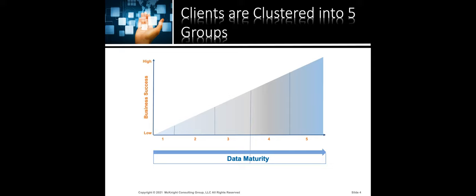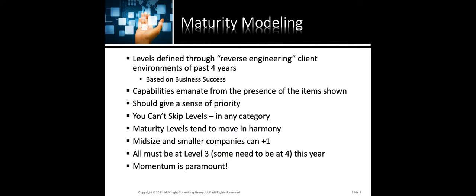We frequently work in very large organizations and aren't always privy to everything going on from a data perspective — so when we evaluate 'the business,' it's not necessarily the entire enterprise. If we're at PepsiCo or GE, we're grading out the department we have visibility into. But I think the study has tremendous merit and insights. These levels were defined through reverse engineering client environments over four years, based on business success, with all the data maturity metrics letting the chips fall where they may — and they turned out to be quite correlated to business success.